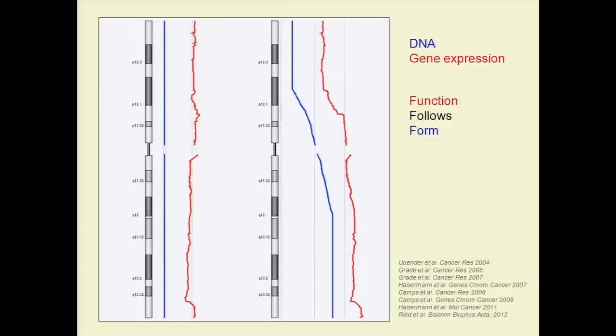This is not only the case in our model system, but also in real tumors. Here, a control with normal DNA copy number has normal gene expression levels. But if you have copy number decreases or increases, the gene expression goes down or up accordingly in those regions. It's completely clear: function follows form. This is established not only from our laboratory, but now accepted in the scientific community.